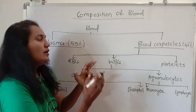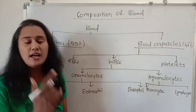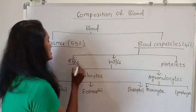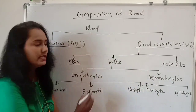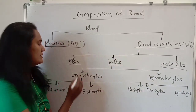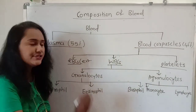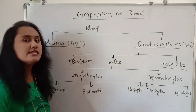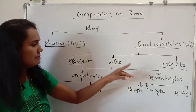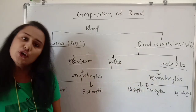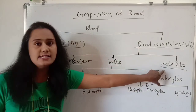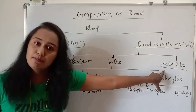Blood corpuscles bhi teen prakar ke hote hai apne blood ke andar. First is the RBC, WBC and platelets. RBC are also called as erythrocytes, WBCs are also called as leukocytes, and platelets are also called as thrombocytes. These three cells are present in the blood.